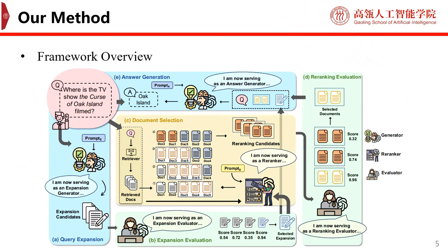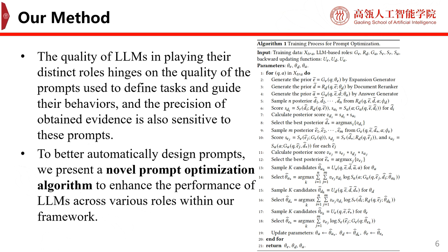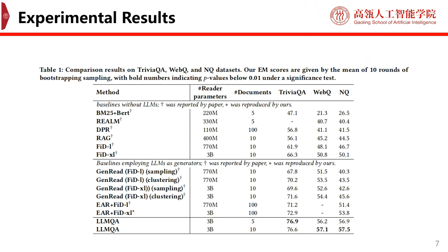And finally, the answer generator generates the final answer according to the question, generated expansion, and the re-ranked documents. Furthermore, to better automatically design prompts, we introduced a novel prompt optimization algorithm to enhance the performance of LLMs across various roles within our framework. We also conducted extensive experiments to verify that our method achieves the best performance in terms of both answer accuracy and evidence quality for the ODQA task.